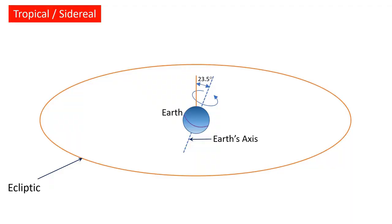Take a look at the diagram on the screen. Here, the Earth is in the center, and the orange circle around it is called the ecliptic, which is the Sun's apparent path. You may already know that the axis of the Earth is an imaginary line which passes through its center and connects the north and south poles. We also know that Earth's axis is tilted at an angle of about 23.5 degrees to its orbital plane or ecliptic.